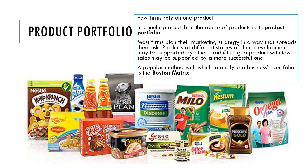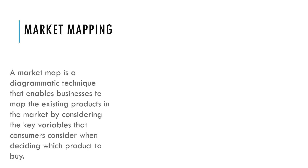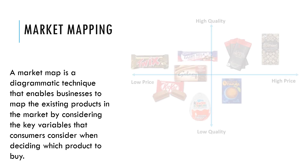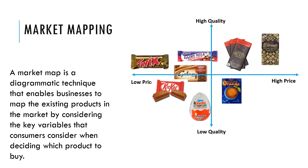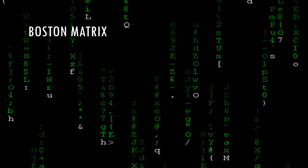We're going to look at the Boston Matrix as a popular way to analyze a business portfolio. Another way of looking at the product portfolio is market mapping — a diagrammatic technique that enables businesses to look at existing products in the market by considering two variables such as quality and price, and then try to identify where there may be a gap in the market where their products might fit.